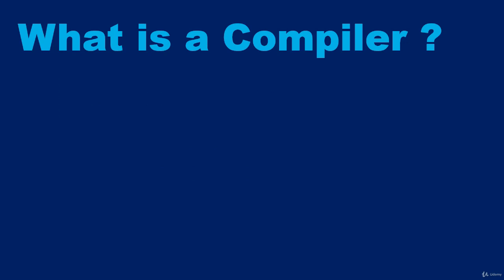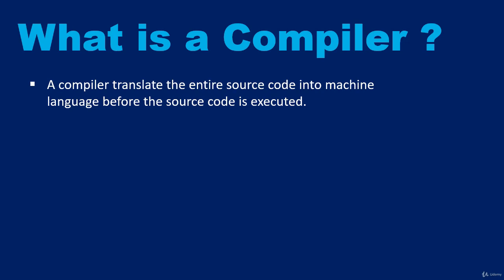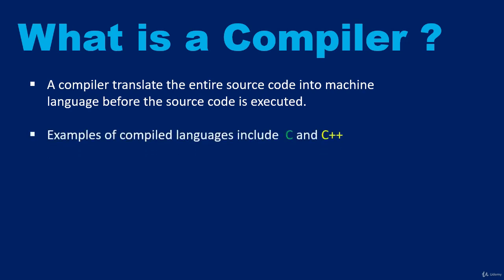What is a compiler? A compiler translates the entire source code into machine language before the code is executed. For the computer to understand what you're trying to do, you use a compiler to convert your code into machine-readable code. Examples of compiled languages include C and C++.